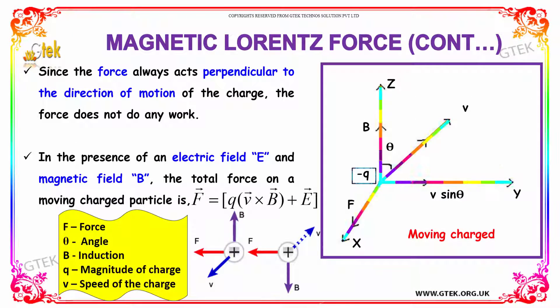Since the force is always perpendicular to the direction of motion of the charge, the force does not do any work. In the presence of electric field E and magnetic field B, the total force on a moving charged particle is given as F vector equals Q into V vector cross B vector plus E vector.